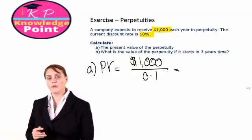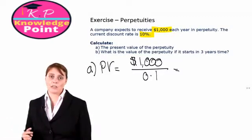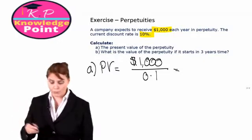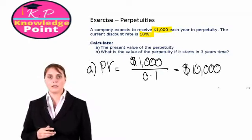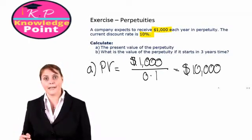So, the present value of receiving $1,000 each year, forevermore, is $10,000. Very straightforward, I hope.